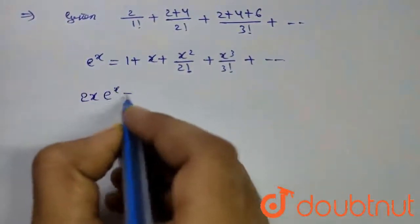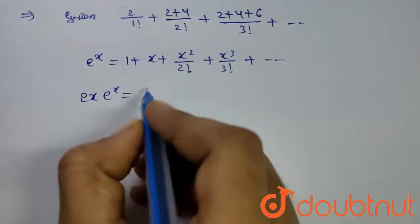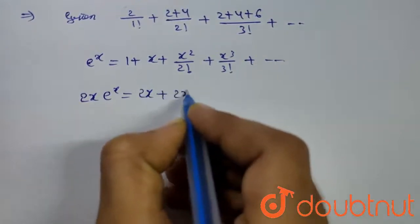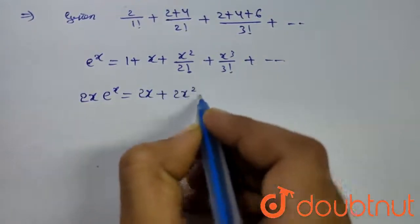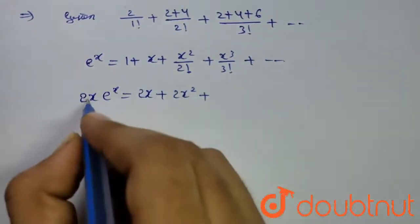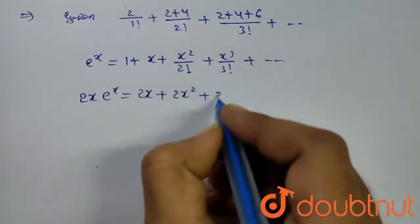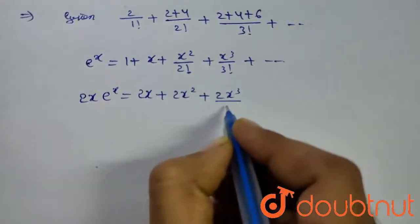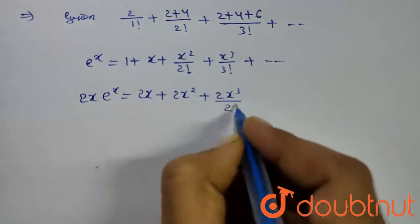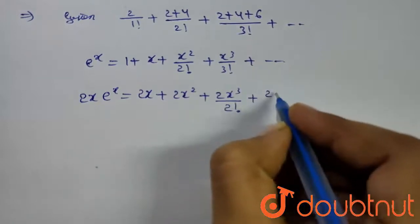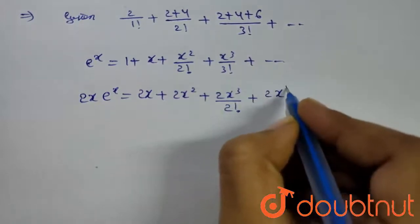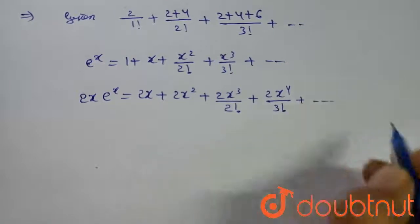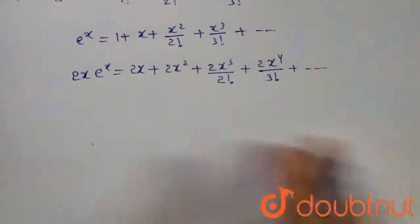Therefore, 2x·e^x equals 2x plus 2x squared plus 2x cubed divided by 2 factorial plus 2x to the power 4 divided by 3 factorial, and so on.